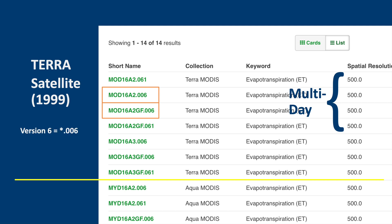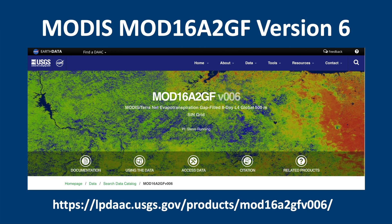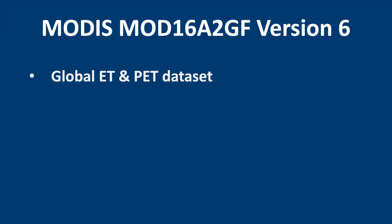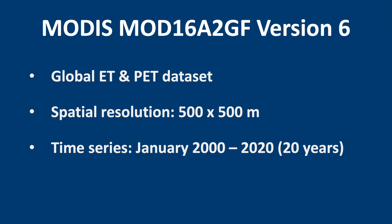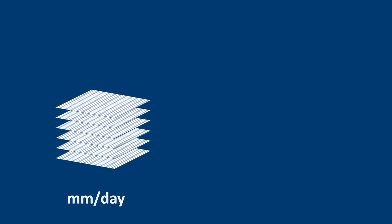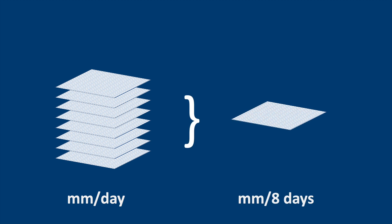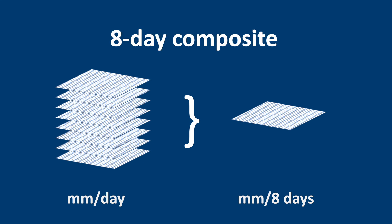Note that there are two different extensions. The extension 006 means version 6, the latest version. The extension 061 means version 6.1, which is the new version. The processing is scheduled to be finished by the end of 2021, so next year we'll be using this data. At the moment we'll stick to version 6. Here's the website for MOD16A2GF version 6. It is a global evapotranspiration and potential evapotranspiration dataset with a resolution of 500 meters, available for the last 20 years. The timestep is the 8-day composite, meaning the amount of evapotranspiration that occurs each day over an 8-day period is summed together to produce evapotranspiration in millimeters over 8 days. Note that MODIS passes over each part of the Earth every 1 to 2 days, so there will be days without any data, which is compensated for in the 8-day composite.